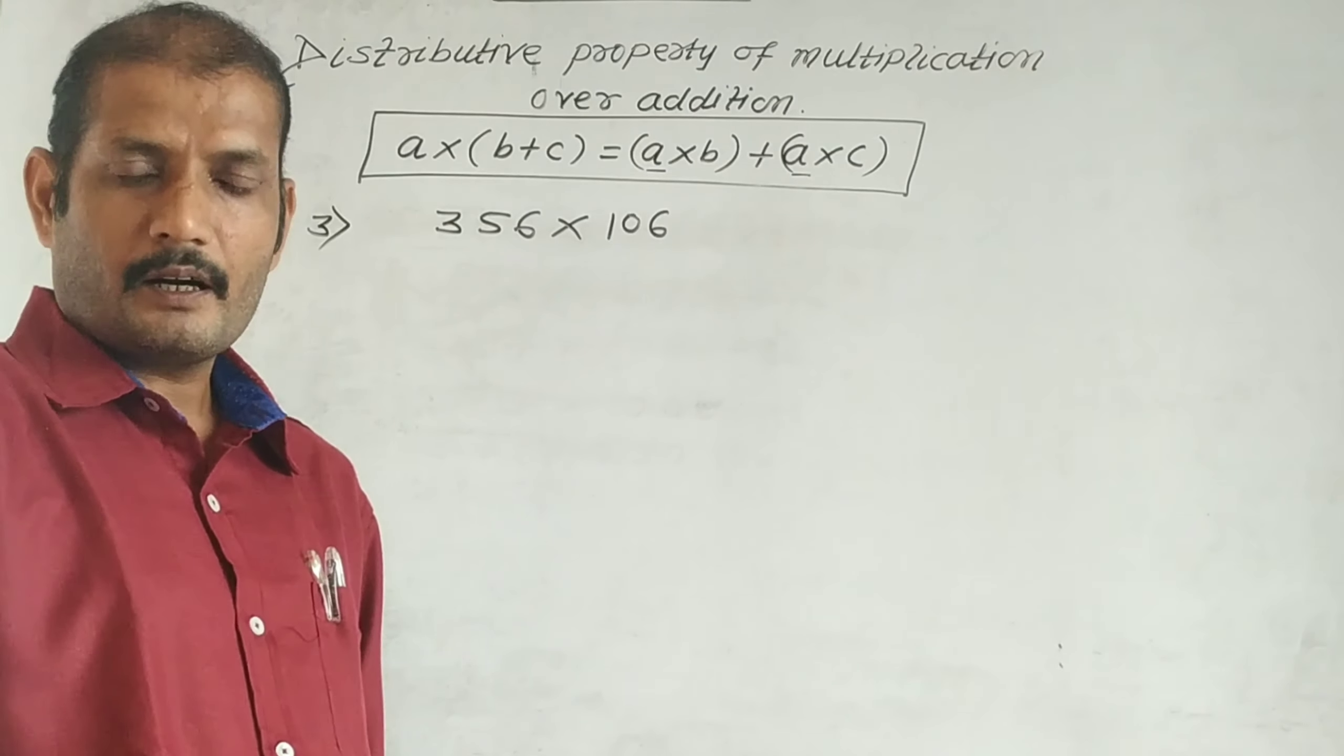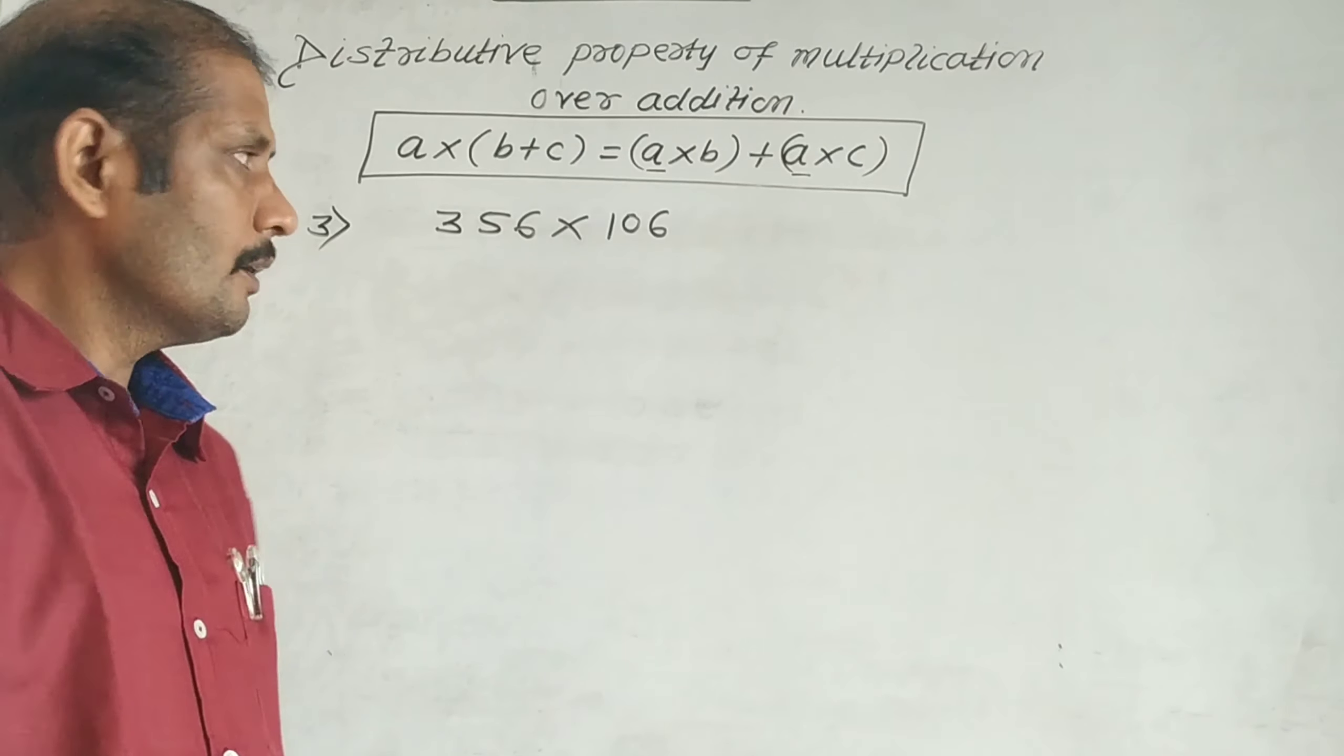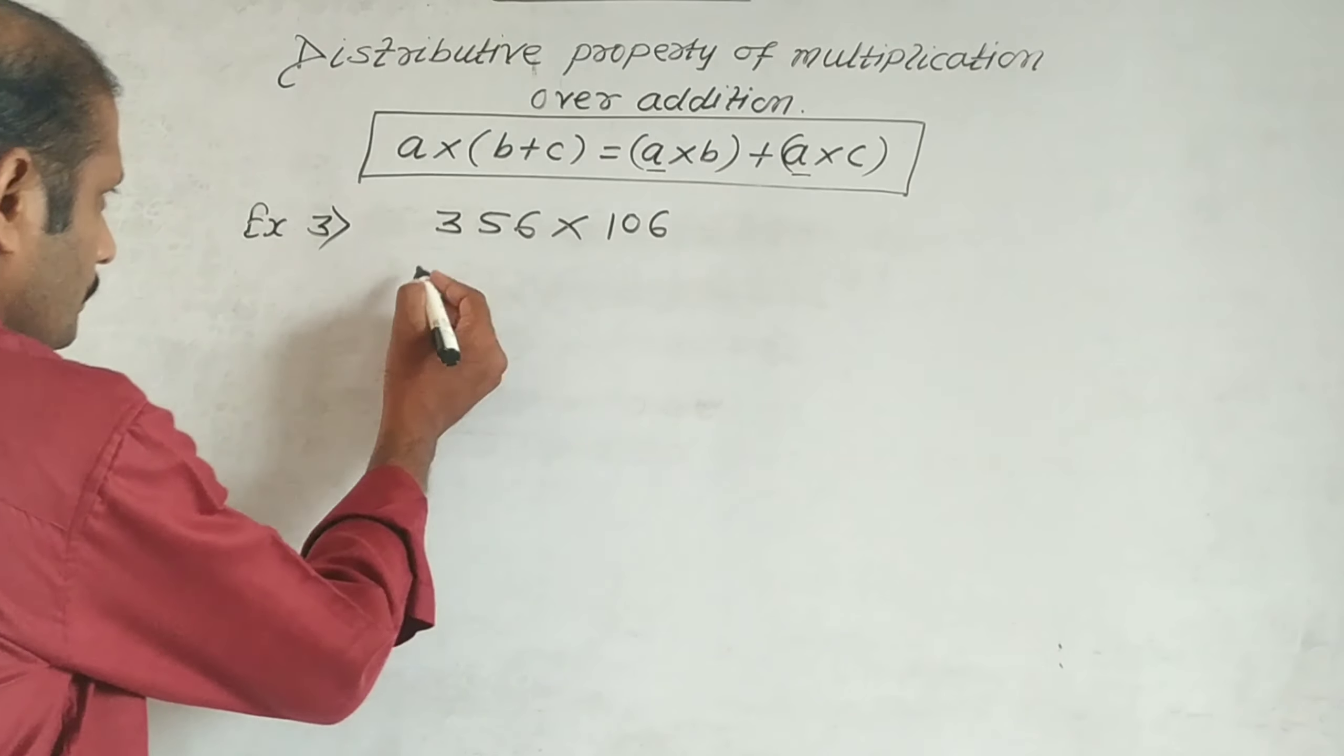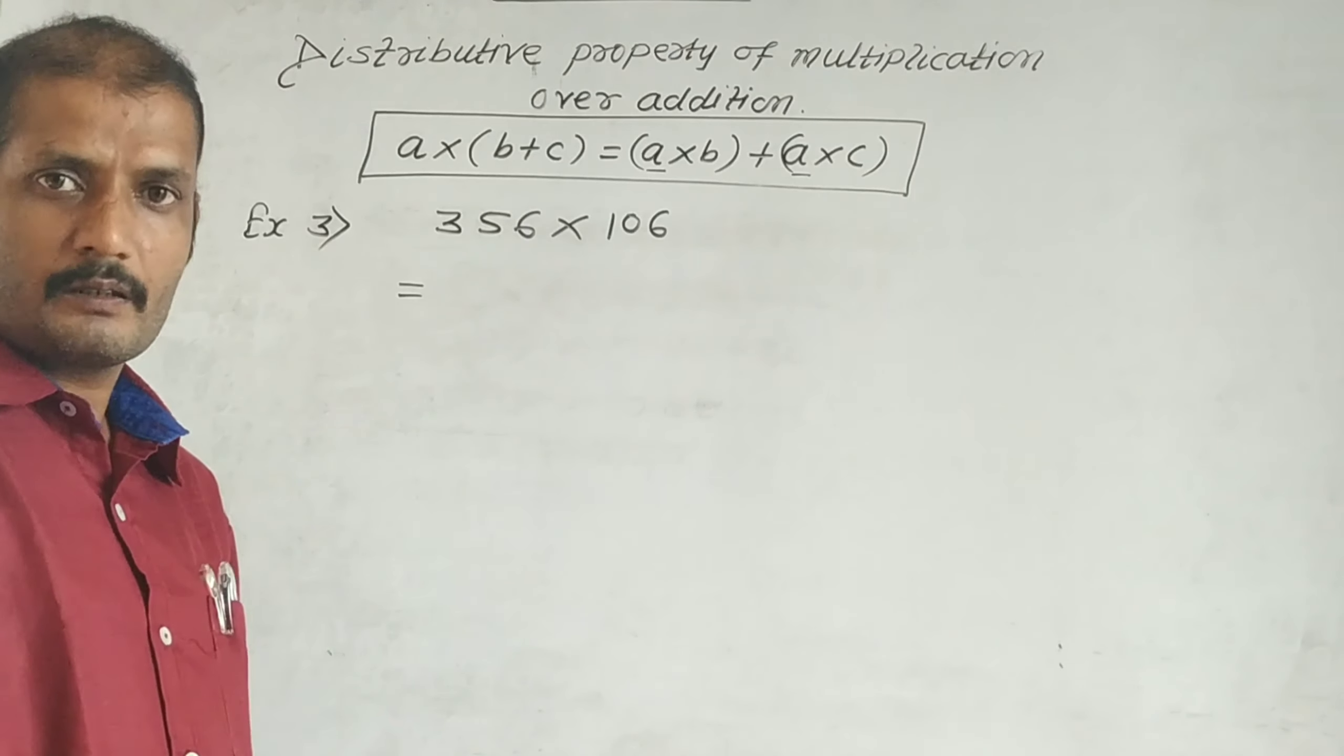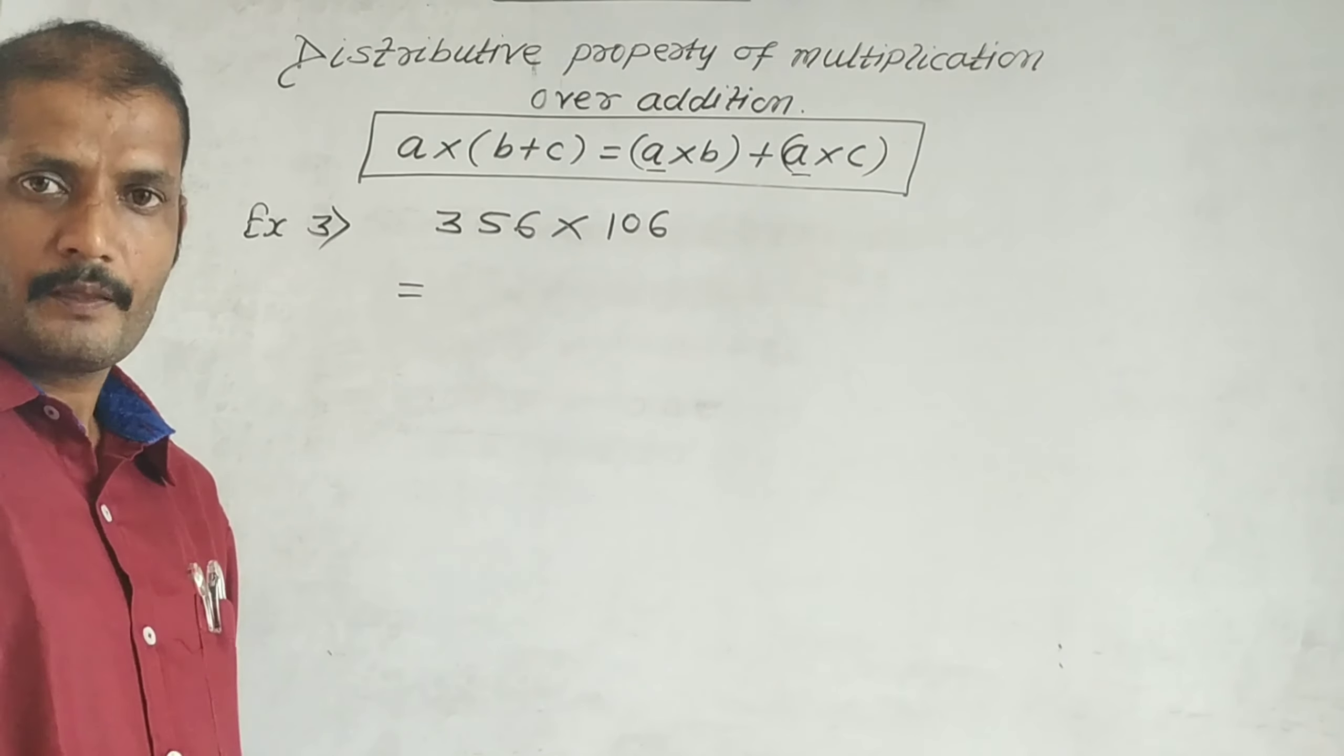356 × 106. When is this property useful? Just over 100, or just over 1000 or 10,000 - we can use this property to multiply easily.